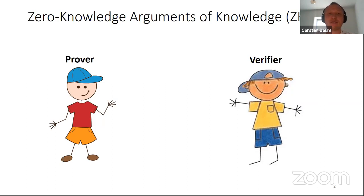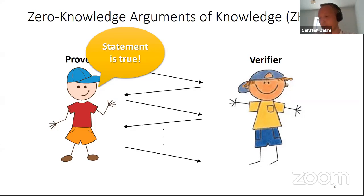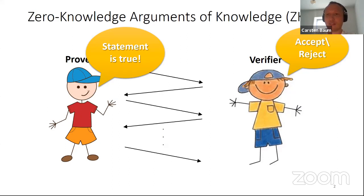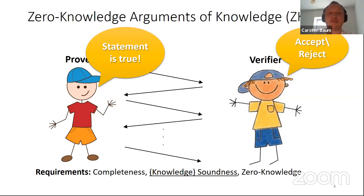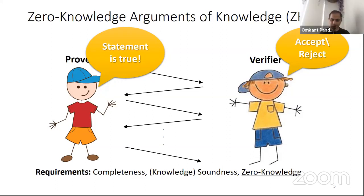In a zero-knowledge argument of knowledge, we have a prover and a verifier. Both have a statement; the prover claims it is true and they run an interactive protocol. This should convince the verifier, who will say accept or reject. We require: completeness — if the statement is true and the prover has a witness, the verifier always accepts; and knowledge soundness — if the prover makes the verifier accept with high enough probability, we can always extract the witness.